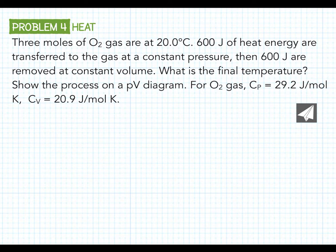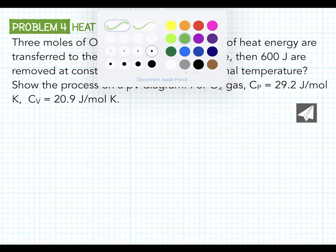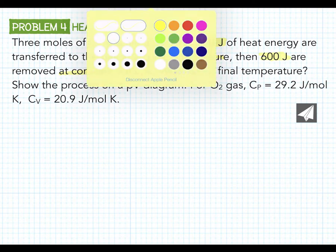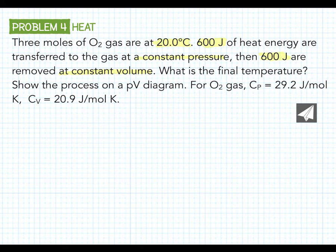We have three moles of O2 gas at 20 degrees Celsius. We're putting in 600 joules at constant pressure and then removing 600 joules at constant volume. So we have three moles, 20 degrees Celsius where we start. 600 joules at constant pressure, then 600 joules at constant volume. This is transferred to the gas, so this is plus 600, and then this is out of the gas, so this is minus 600. We want to know final temperature. And we want to show the process on a PV diagram.